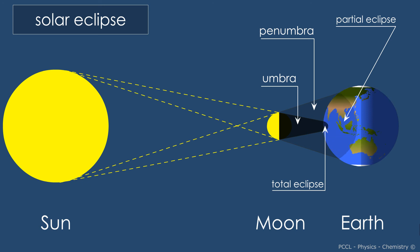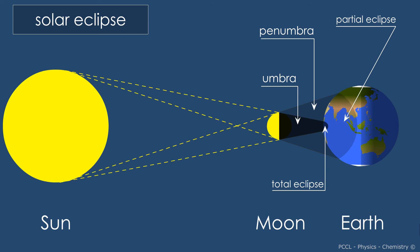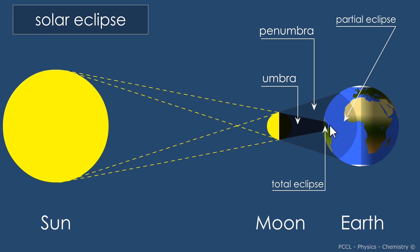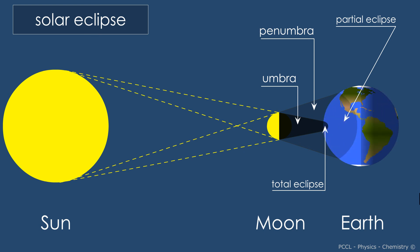This situation is comparable to the previous one. When the moon is between the sun and the earth, the shadow cast by the moon hides the sun. This is the configuration of a solar eclipse.